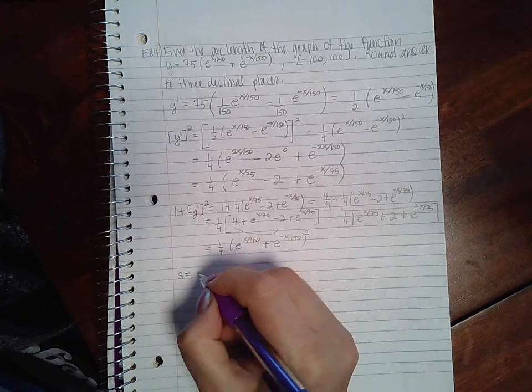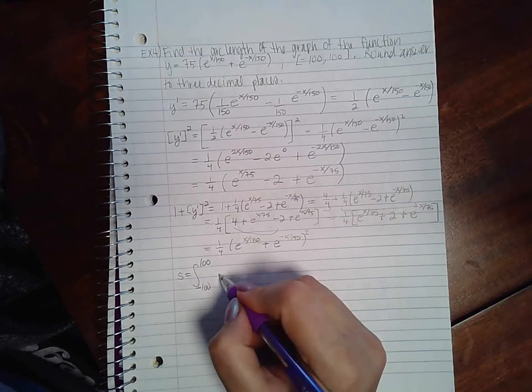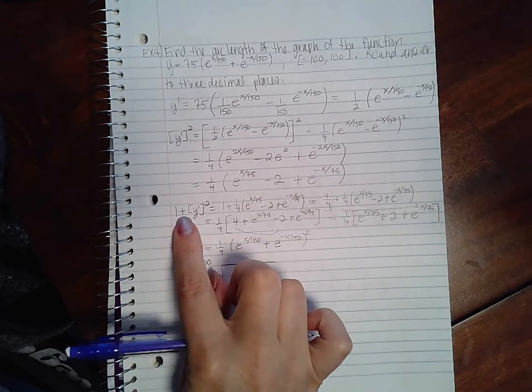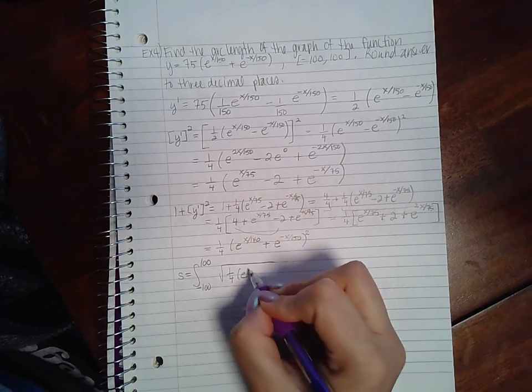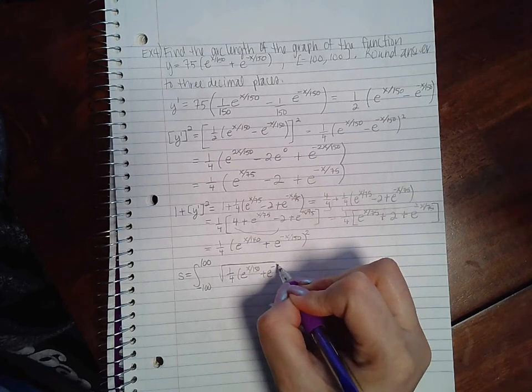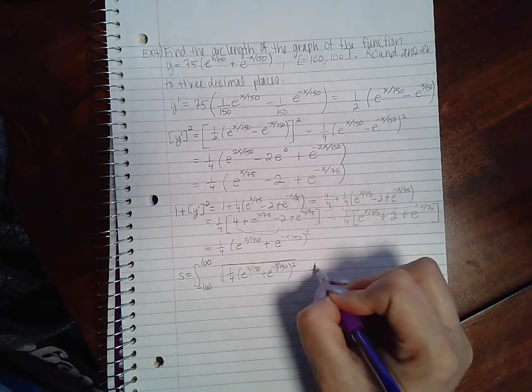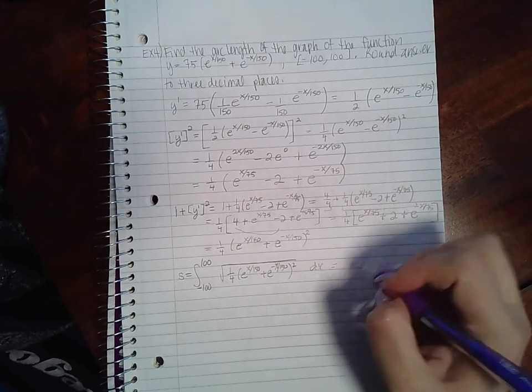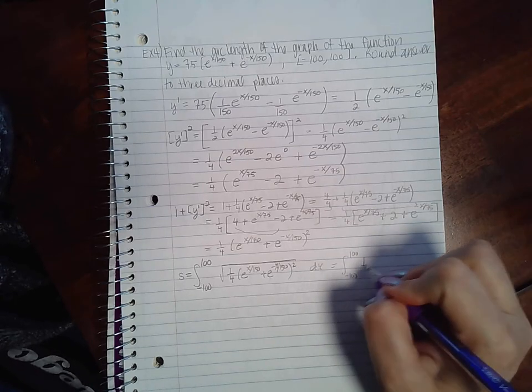So now I should be able to plug everything into my arc length. Negative 100 to 100, and the square root of 1 plus y prime squared is the square root of this.